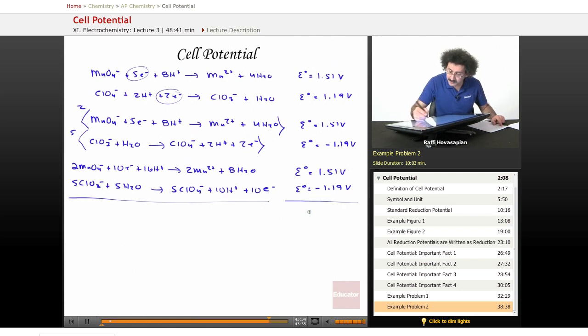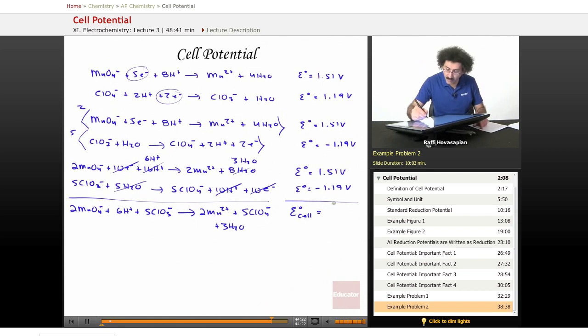Now let's add this. 10 electrons cancels 10 electrons. 10 H plus leaves 6 H plus. 5 H2O leaves 3 H2O. And I end up with the following: 2 permanganate ions plus 6 hydrogen ions plus 5 chlorate ions produce, if I were to close the circuit, 2 manganese plus 5 perchlorate plus 3 H2O. And the standard cell potential is equal to 0.32 volts.